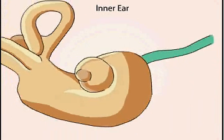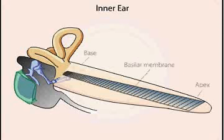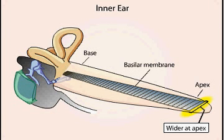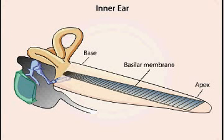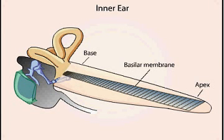The basilar membrane is about five times wider at the apex of the cochlea than at the base. Even though the cochlea itself narrows towards its apex, it vibrates in response to sound transmitted to the fluid-filled cochlea by deflections of the oval window, initiated by the bones of the middle ear. The acoustical stimuli initiate a traveling wave in the cochlea, which propagates from the base towards the apex of the basilar membrane, growing in amplitude and slowing in velocity until the point of maximum displacement is reached.